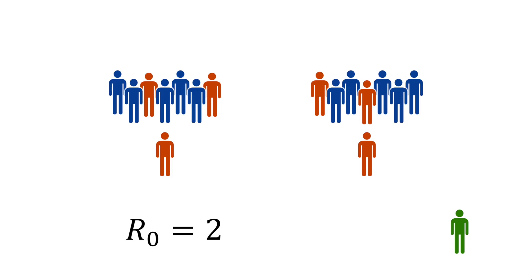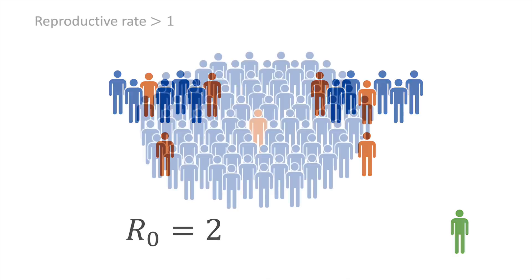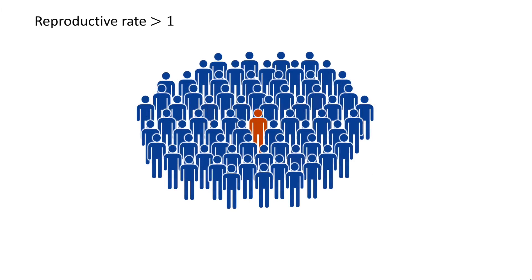As long as sick people each typically infect more than one new person — meaning the effective reproductive rate R is greater than 1 — the virus will continue to spread. But if a sick person typically infects less than one new person, meaning the effective reproductive number is less than 1, the virus will start to fade away.